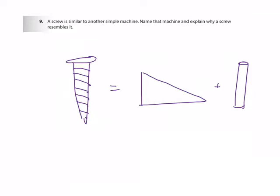Number nine: a screw is similar to another simple machine — name that machine and explain why. A screw is essentially a ramp, or inclined plane, wrapped around a cylinder. It resembles an inclined plane because you can follow the ridges all the way up as if you were climbing up an inclined plane.